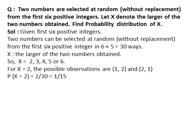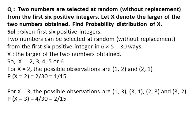For x=2, the possible observations are (1,2) and (2,1) because 2 is the larger of the two numbers obtained. For x=3, the possible observations are (1,3), (3,1), (2,3), and (3,2) because 3 is the larger of the two numbers obtained.